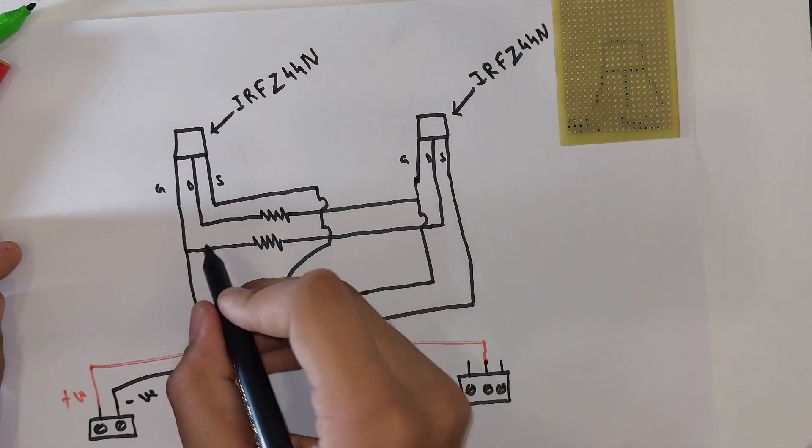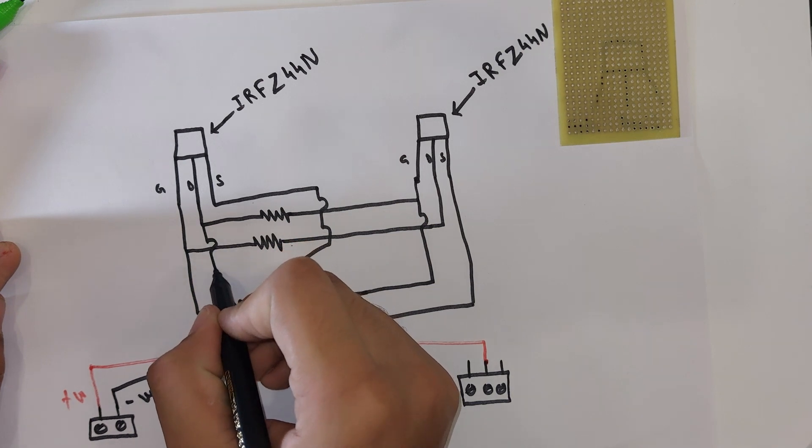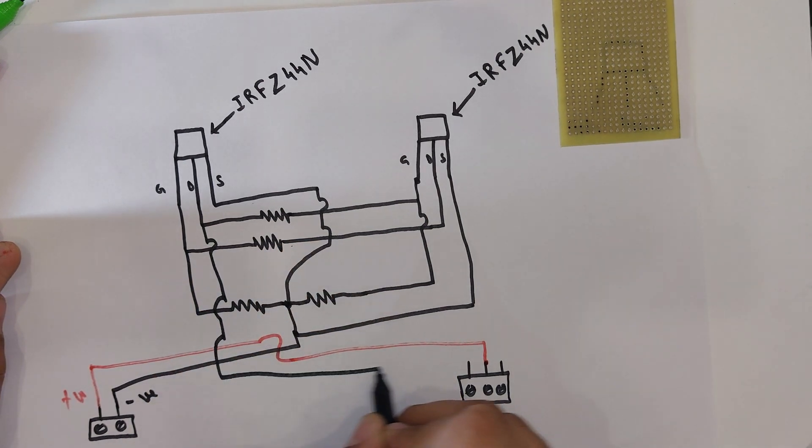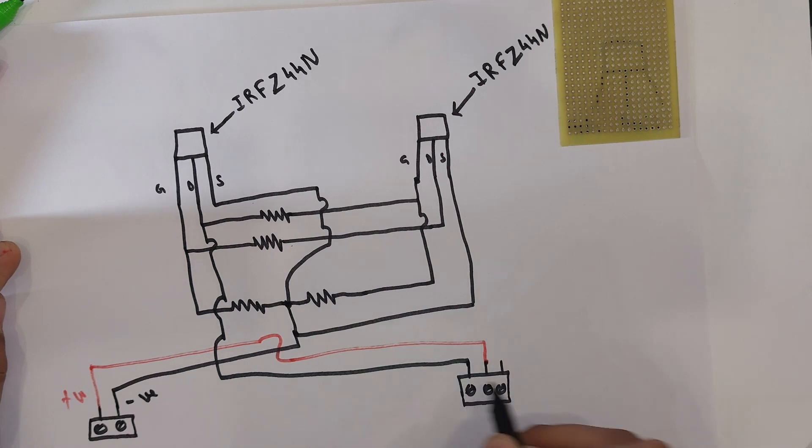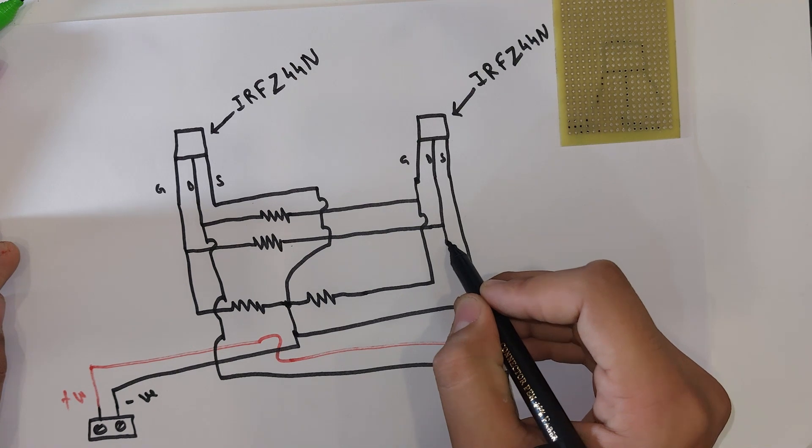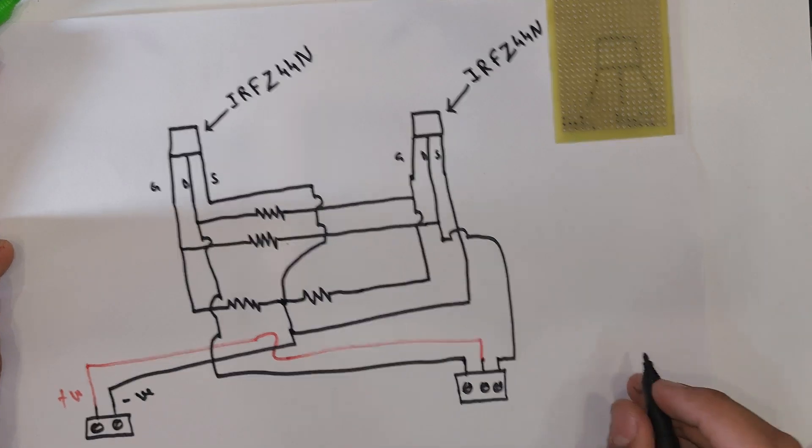Next, we take the drain of the first MOSFET and connect to the first terminal of the connector, and we take the drain of the other MOSFET and connect to the other terminal of the connector.